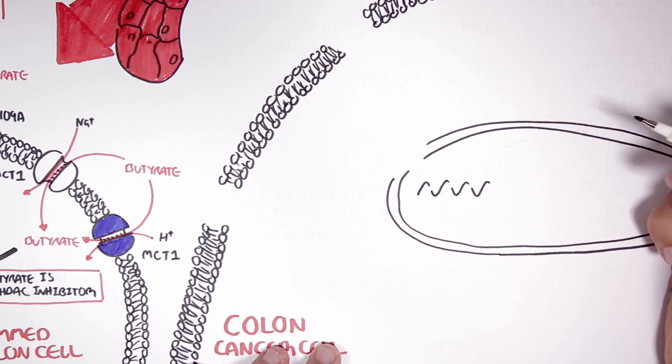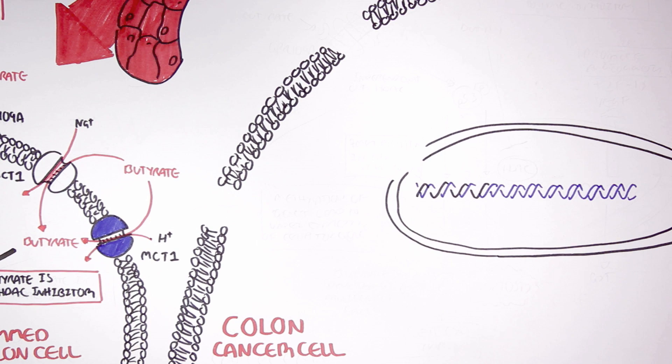Before continuing on, it must be noted that once a colon cell becomes cancerous, the colon cancer cells seem to prefer glucose over butyrate as an energy source. Also, the effects of butyrate on an inflamed colon cell can apply for a colon cancer cell, such as butyrate's inhibitory effect on nuclear factor kappa B.